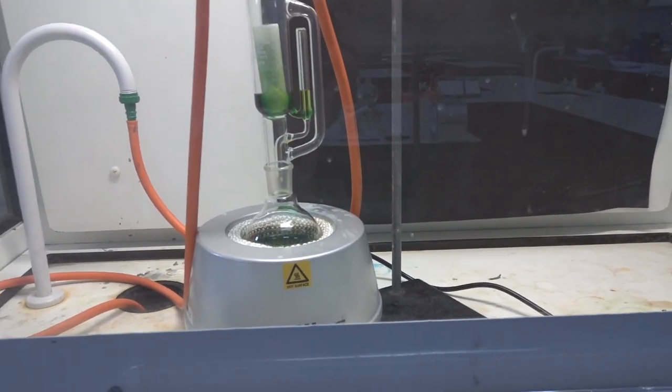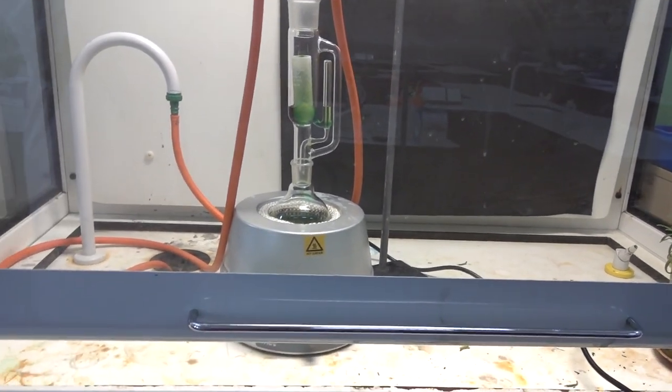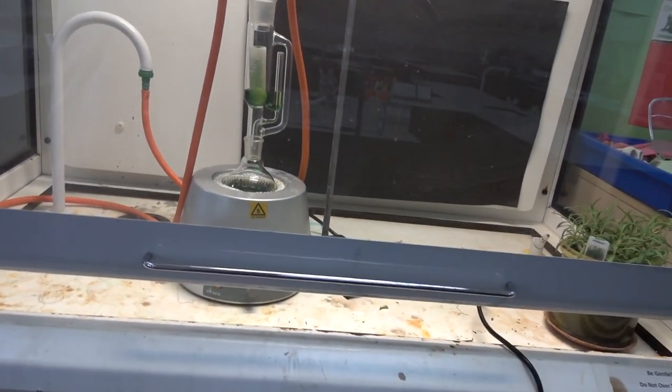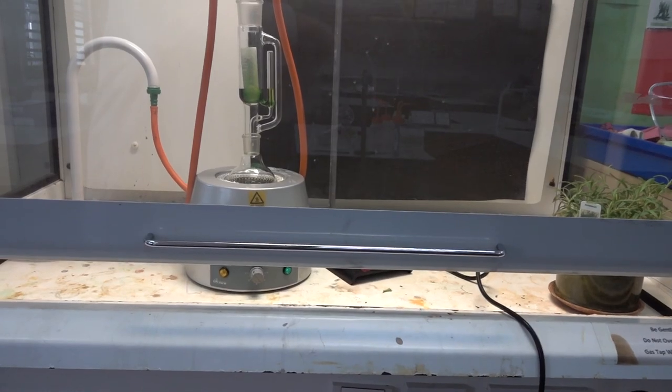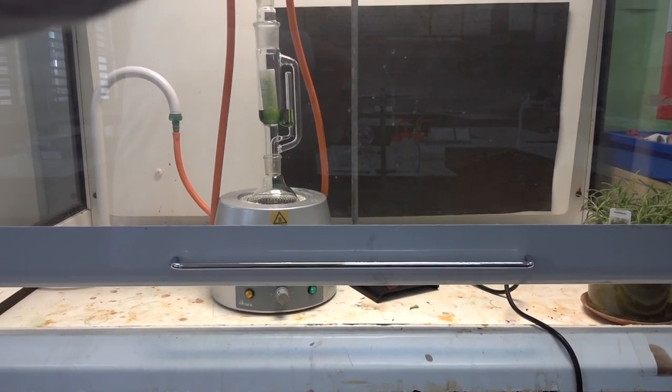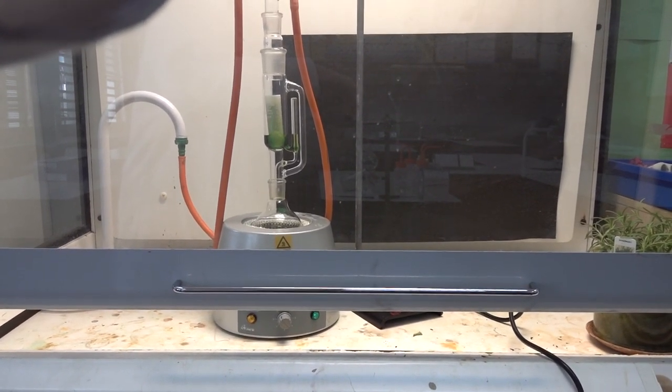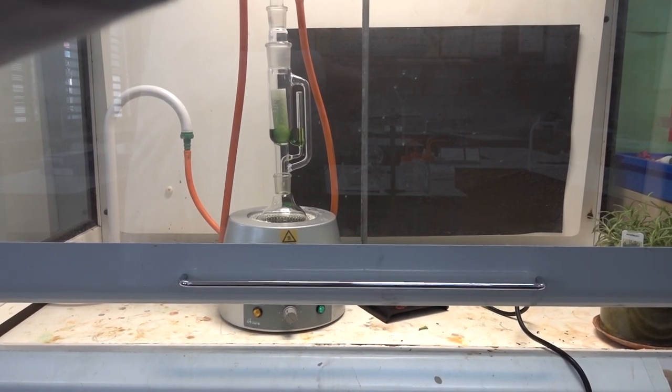Pull the fume hood back down and turn the fan back on and leave that to run for a few cycles. That's the Soxhlet extraction technique.